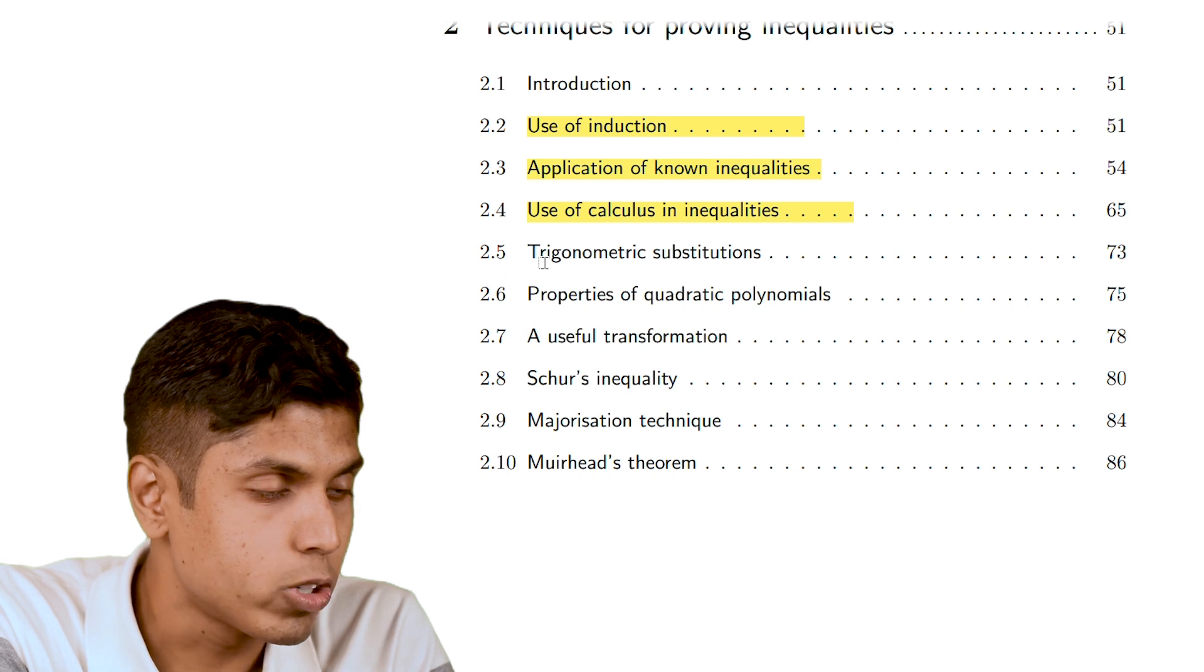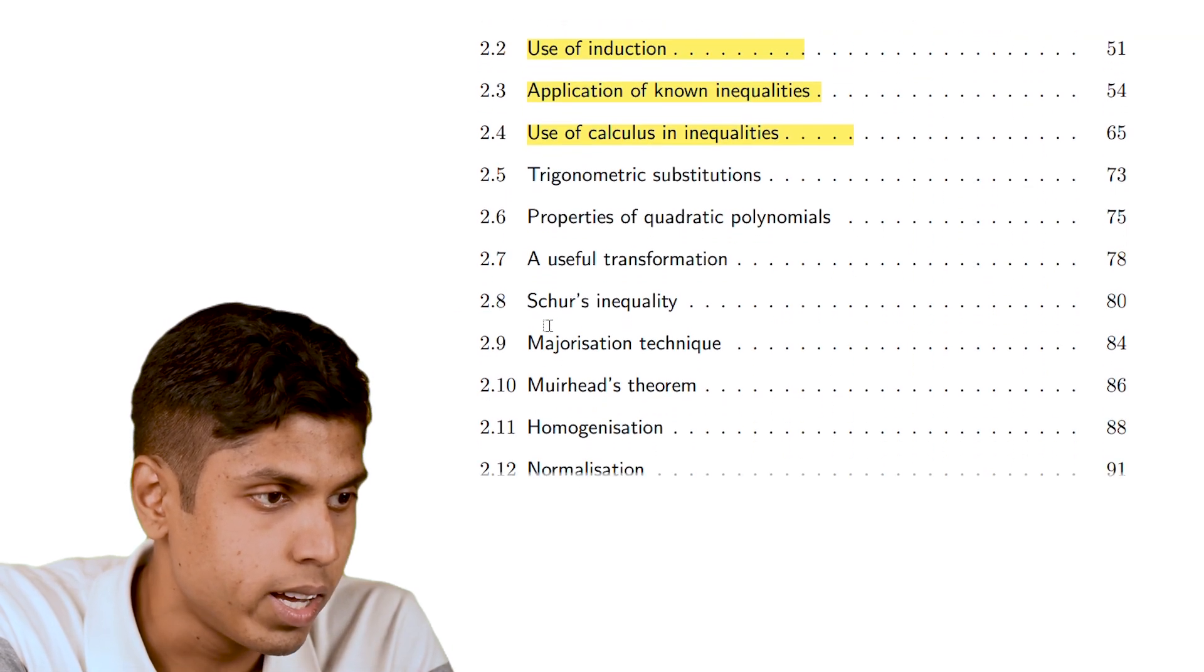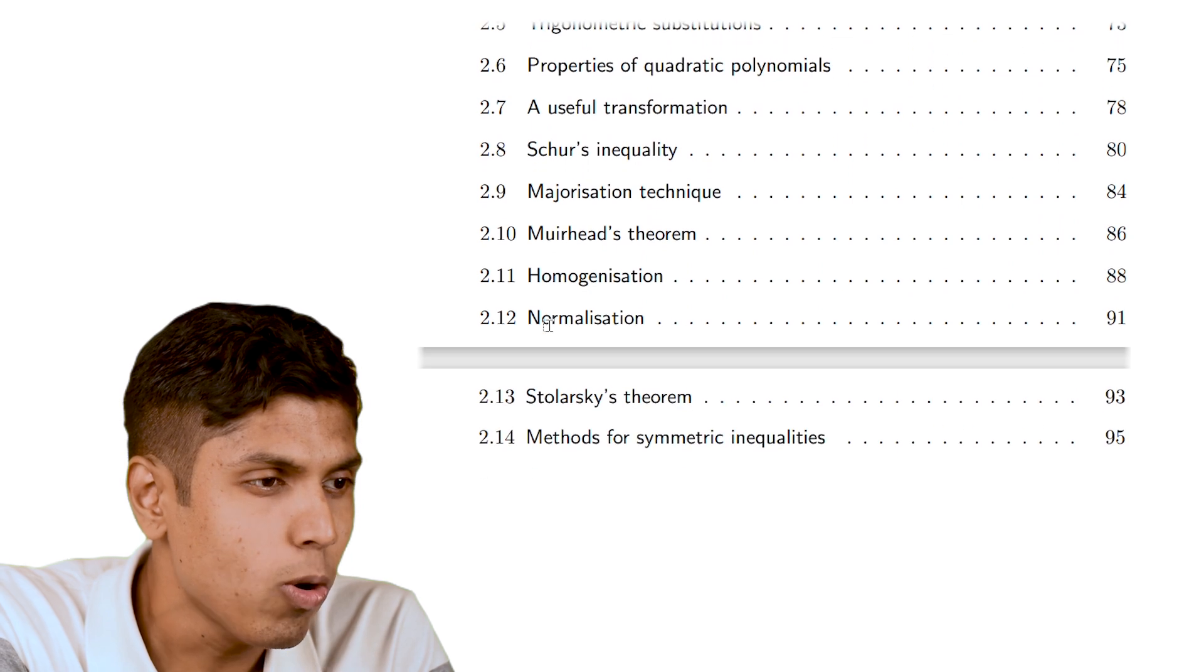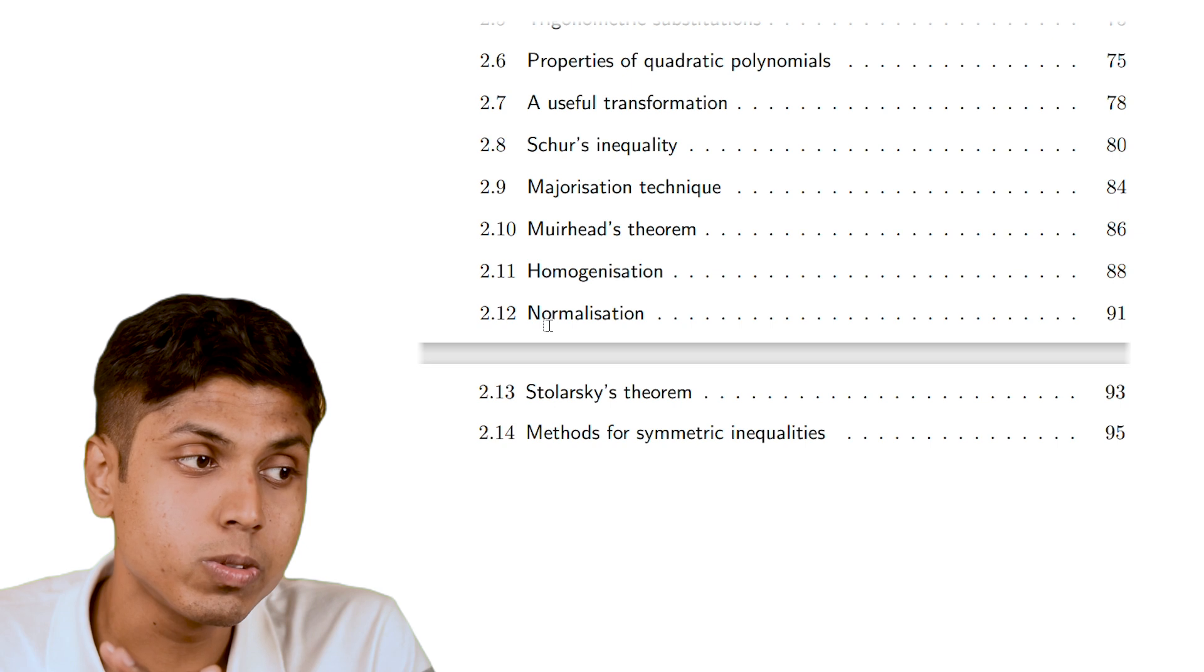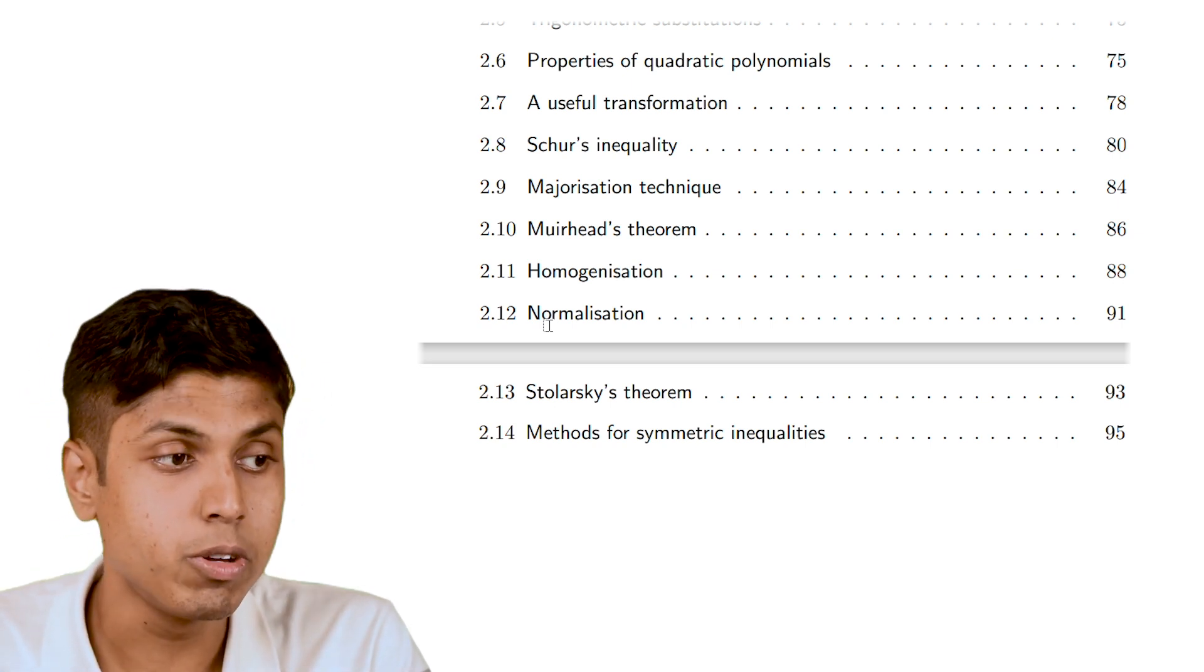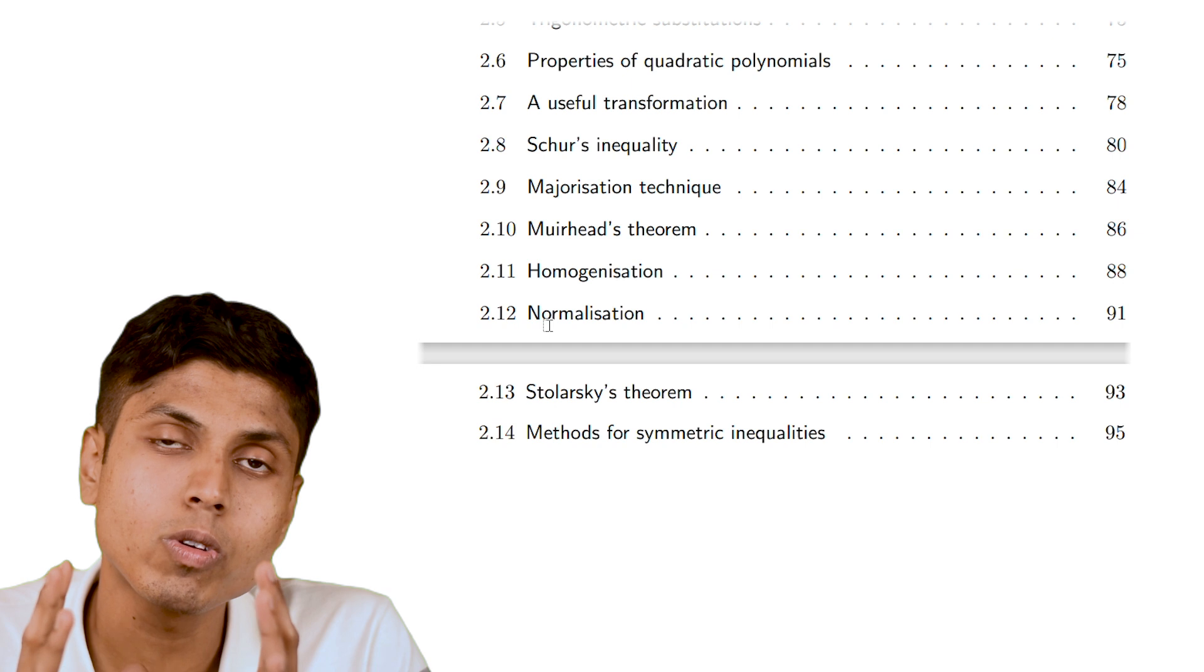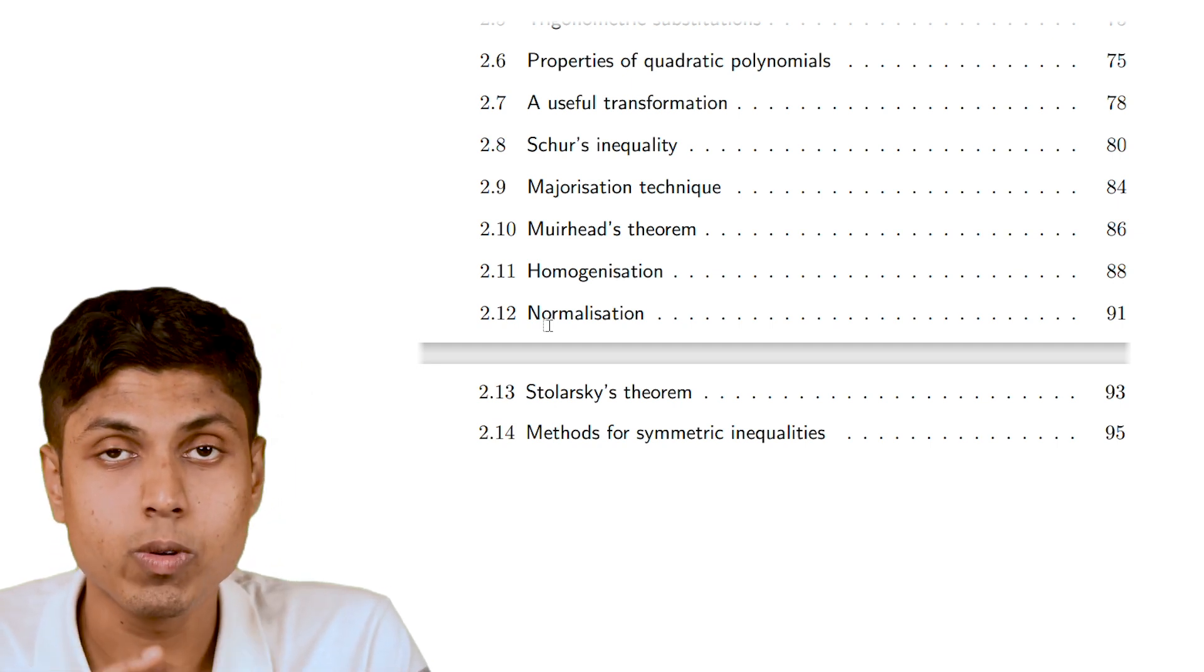And you have trigonometric substitutions, quadratic polynomials. And slowly it progresses to advanced inequalities like Schur's inequality, majorization technique, Muirhead theorem. Muirhead's theorem is one of the most important theorems for advanced inequality learners.